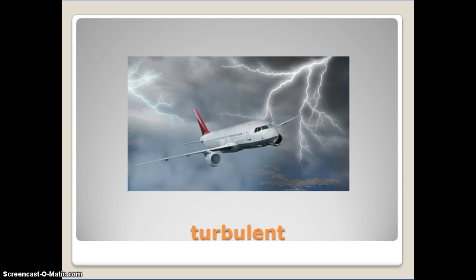If you have ever been on an airplane, you may have experienced turbulence. The next word is turbulent — the adjective form of that word. The first syllable is accented. It means disorderly, riotous, violent, or stormy. If you've experienced turbulence, it's a little scary because of the violent and crazy nature of it — they don't know when it's going to strike and usually ask you to keep your seatbelt on. The synonym is unruly; antonym is calm.